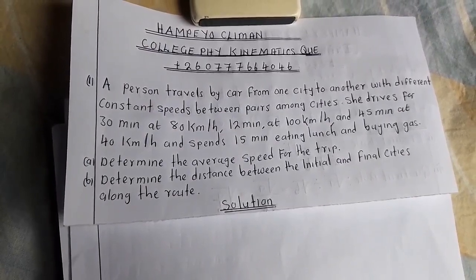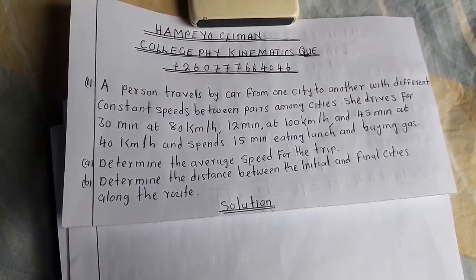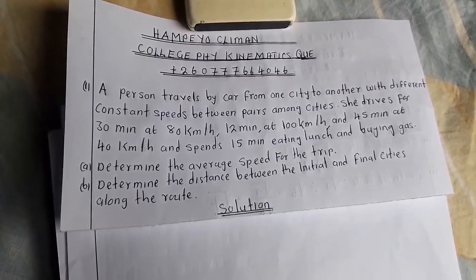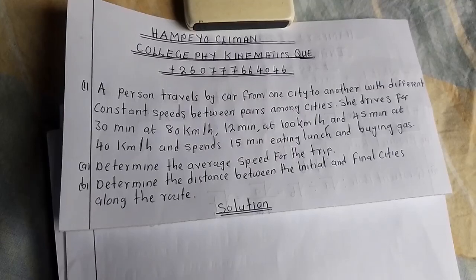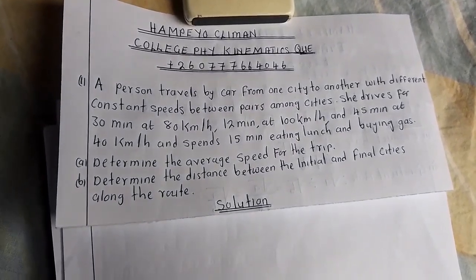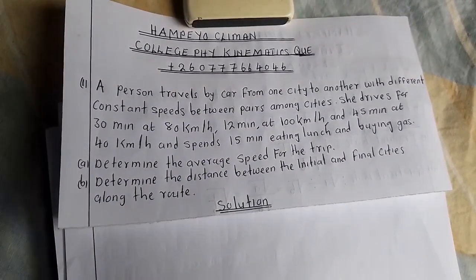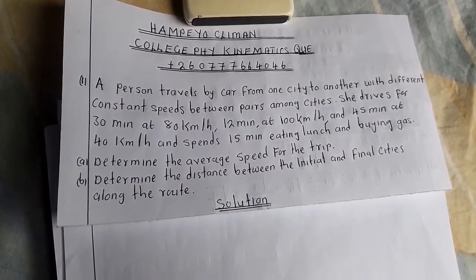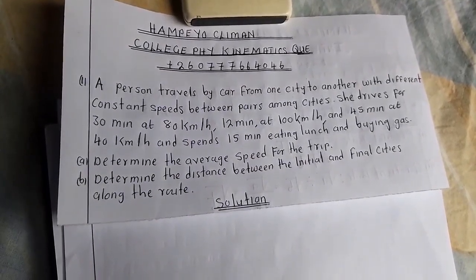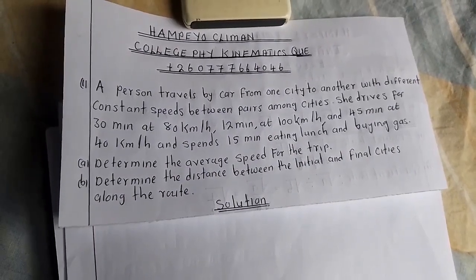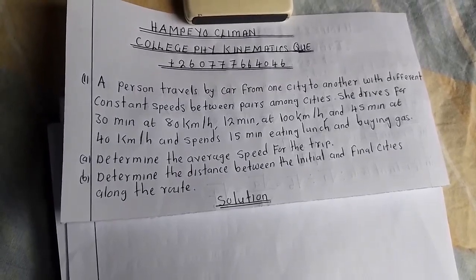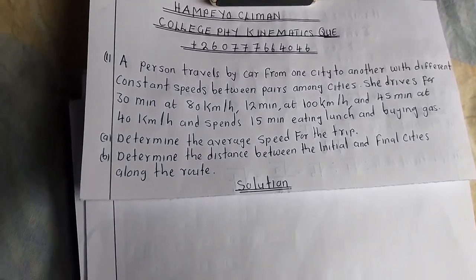She drives for 30 minutes at 80 kilometers per hour, 12 minutes at 100 kilometers per hour, and 45 minutes at 40 kilometers per hour, and spends 15 minutes eating lunch and buying gas. We need to determine: (a) the average speed for the trip, and (b) the distance between the initial and final cities along the route.